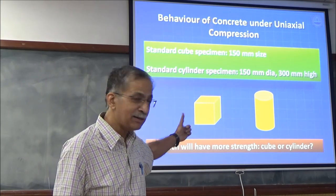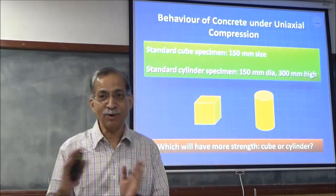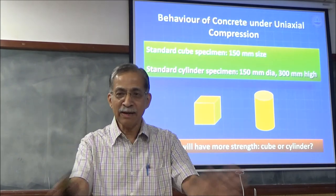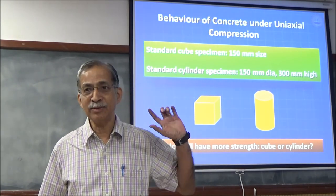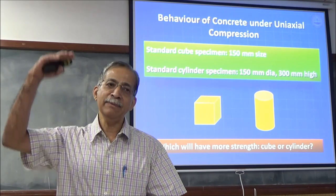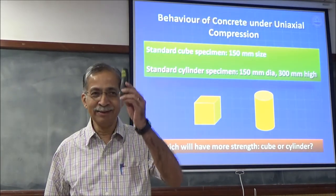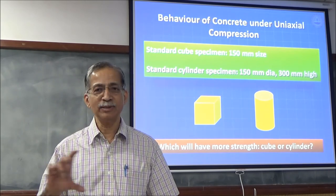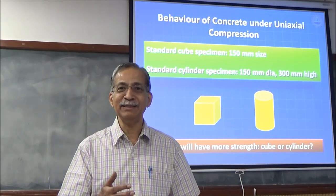Don't bring slenderness into the cube-vs-cylinder picture because there is no lateral movement — it's symmetric. Strength of a material doesn't depend on shape. Cylinder strength is supposed to reflect more correctly the true uniaxial compressive strength.